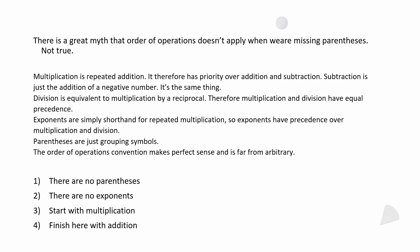Exponents: think of five to the second power — that's the same as five times five. Five to the fifth power is the same as five times five times five times five times five. So what's easier to write: five to the fifth power, or five times five times five times five times five? It's pretty obvious. Exponents are just shorthand for repeated multiplication. In that case, exponents have precedence over multiplication and division.